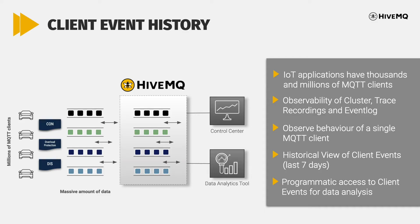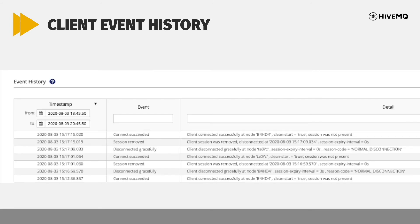HiveMQ deployments can handle millions of clients with massive amounts of data. This leads to a lot of action on the cluster and the need to observe the cluster, for example using trace recordings or the event log. The newly introduced Client Event History adds finer-grained per-client observability into the HiveMQ control center and provides a seven-day historical view of client events. This makes it easy to troubleshoot a single client and helps you diagnose problems even at a later time. The integration in our extension SDK allows you to trigger actions based on events or export the historical data to analyze in a third-party tool.